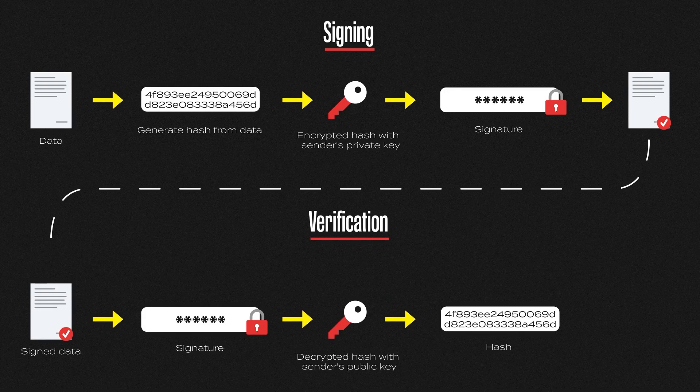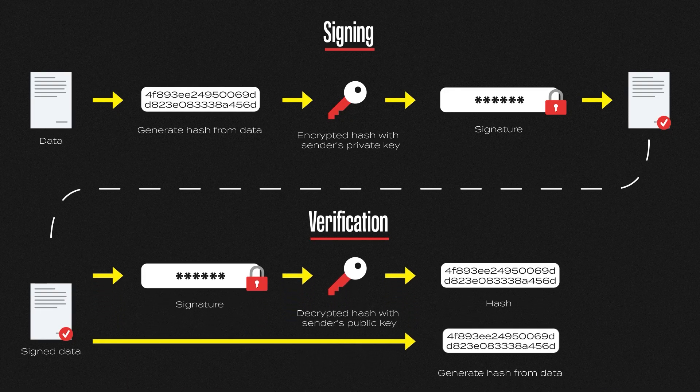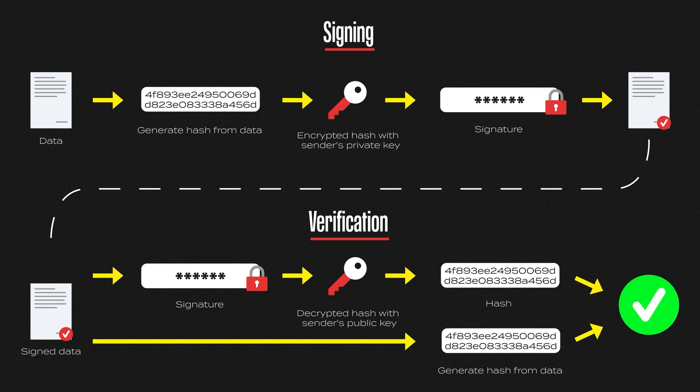Now to prove the document hasn't been changed or tampered with in any way, Bob simply runs the same hashing function against the document and compares it with the hash from the digital signature. If they both match, this proves the document hasn't been changed. So we prove the document came from me because we used the public key to decrypt the signature, and we prove the document hasn't been changed by comparing the hash.